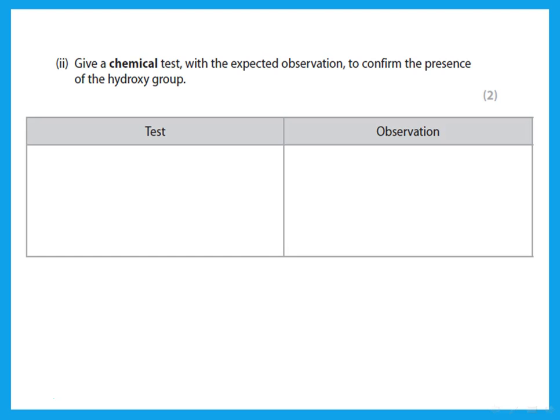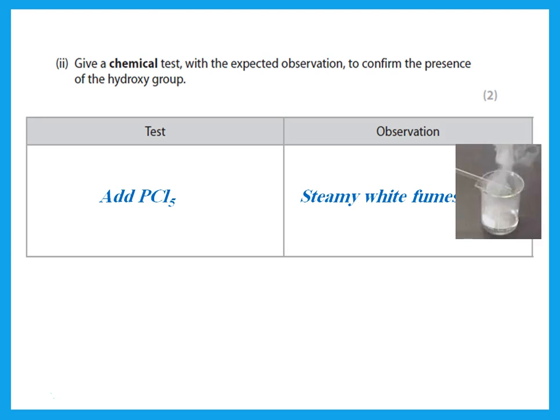Give a chemical test with the expected observation to confirm the presence of the hydroxy group. The test for the OH group is: add phosphorus pentachloride (PCl5) — you should get steamy white fumes if you have something with an OH group. This works for an alcohol and also for an acid, which also has an OH. Alternatively, you could add sodium metal, which would react and give effervescence because it produces hydrogen gas.